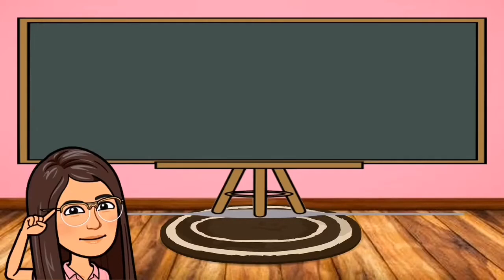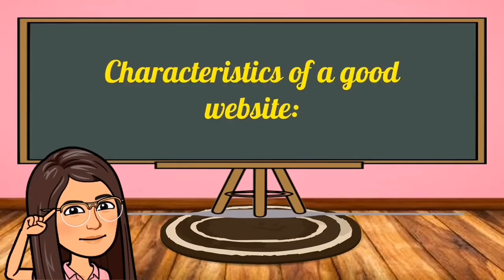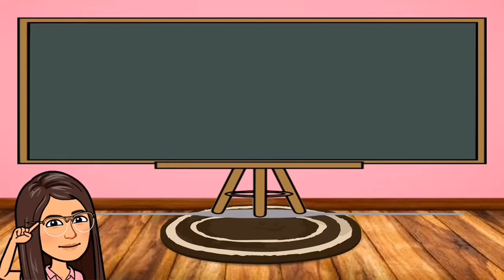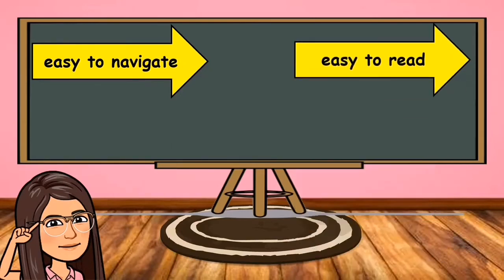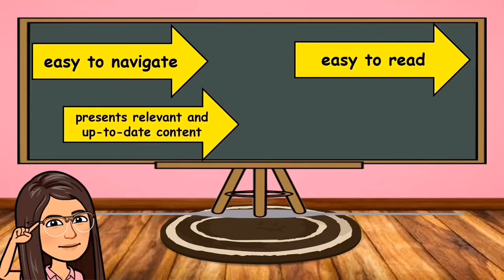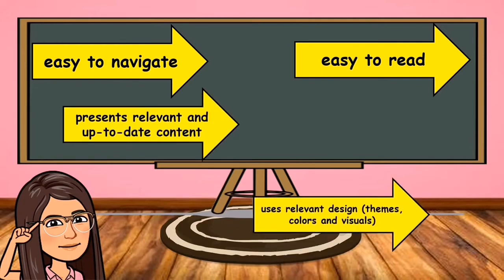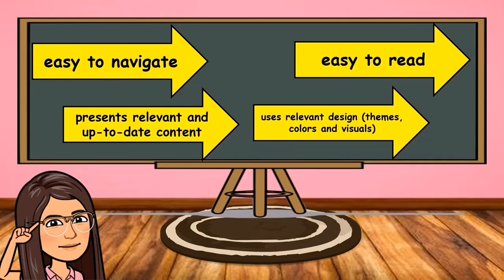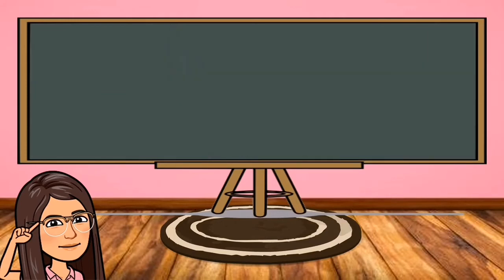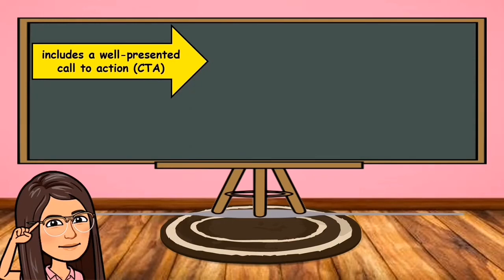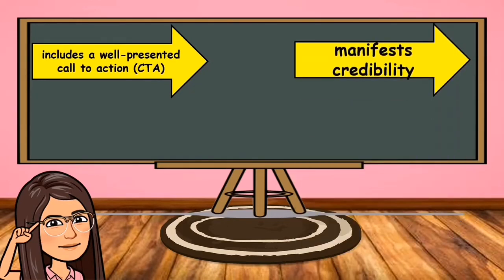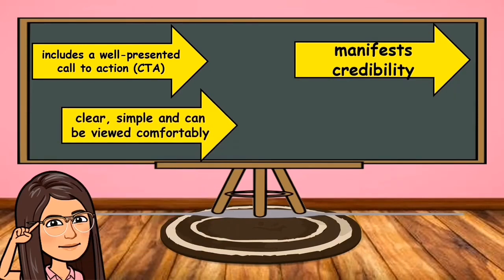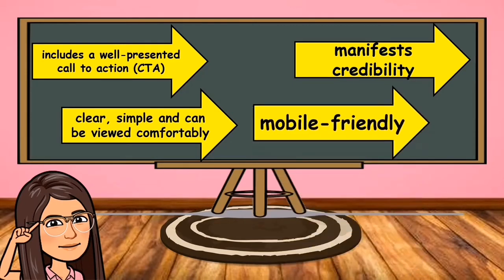Now, let us discuss the characteristics of a good website. A good website is easy to navigate, easy to read, presents relevant and up-to-date content, and uses relevant design like themes, colors, and visuals. A good website includes a well-presented call to action or CTA. It manifests credibility. It is clear, simple, and can be viewed comfortably. And lastly, a good website is mobile-friendly.